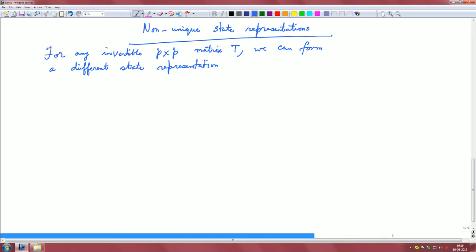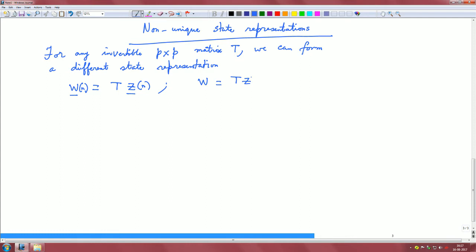What we do is let us suppose w is T times z. I am omitting the vector notation here. With a slight abuse of notation, w is basically T times z. The w is a vector, z is a vector, and T is a matrix which is a p by p matrix and it is invertible.